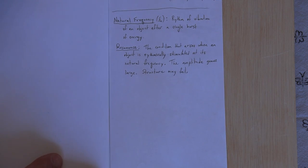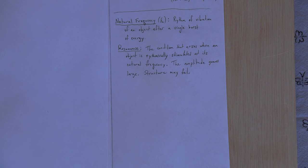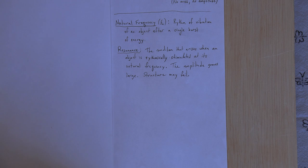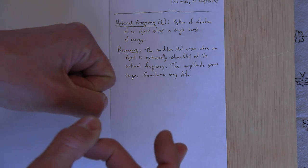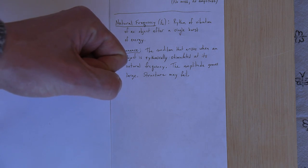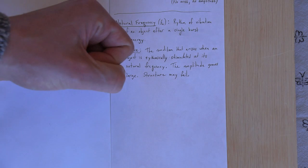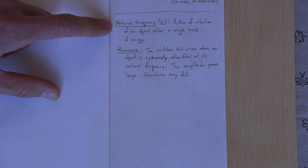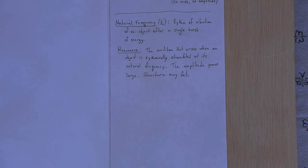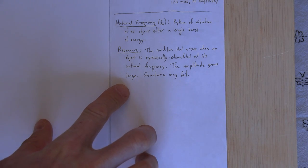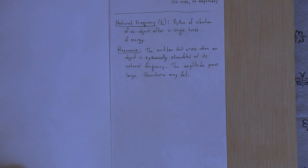A couple last definitions. The natural frequency of something is the frequency of vibration when you give the object a single burst of energy. So in the classroom at school, I had a couple crystal wine glasses and I would flick the wine glass and you would all hear it ring and make a musical note. So when I flick that and let it ring, it's ringing at its natural vibration, or natural frequency. I give it a single burst of energy and then let it ring at its frequency. Resonance is something very interesting. It's the condition that arises when an object is rhythmically stimulated at its natural frequency and what happens in that case is the amplitude grows large and the structure may fail.